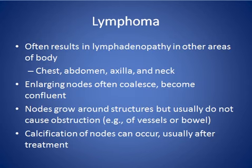Lymph node involvement can occur in other parts of the body, including the chest, abdomen, axilla, and neck. Enlarging nodes often coalesce and become confluent, and you should suspect malignancy. Nodes grow around structures but usually don't cause obstruction. Calcification of nodes can occur, usually after treatment.